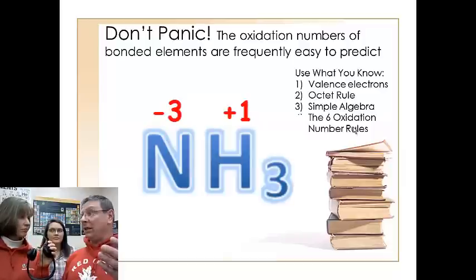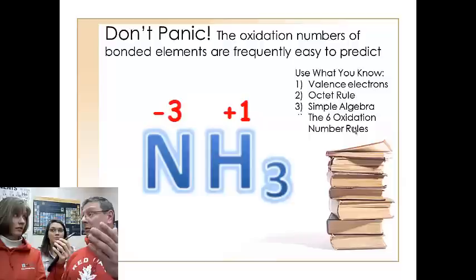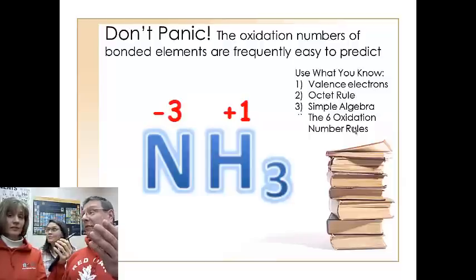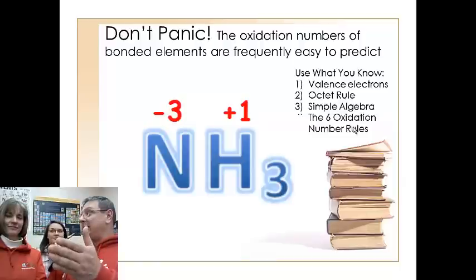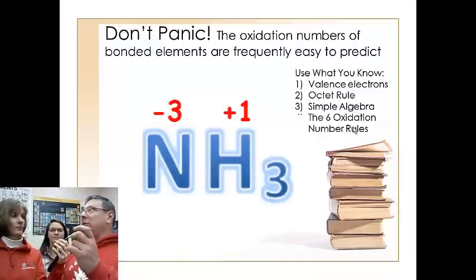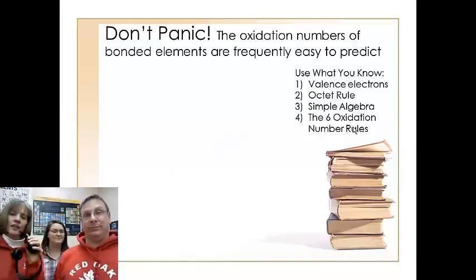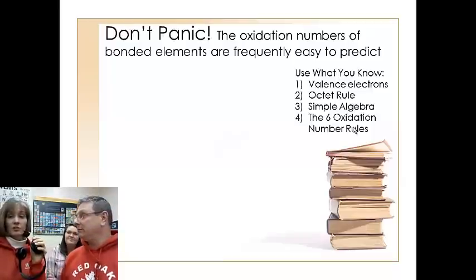Now, that should make sense, though, because if you look at nitrogen on the periodic table over there in group five, well, if it's in group five, it has five valence electrons. In order to have a full octet, it needs to gain three electrons, which would make its charge negative three. Right. It all comes together. And hydrogen has one valence electron to lose.